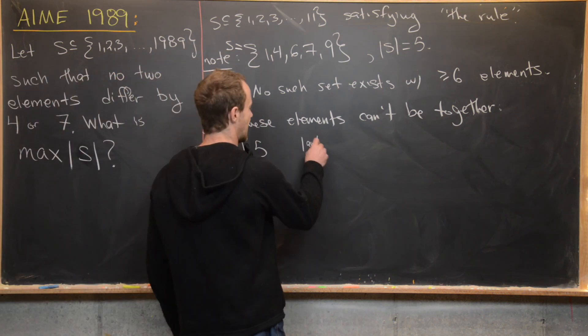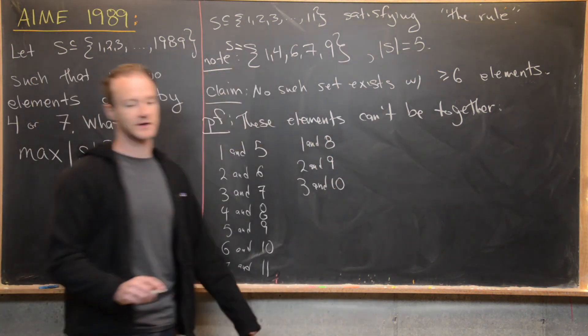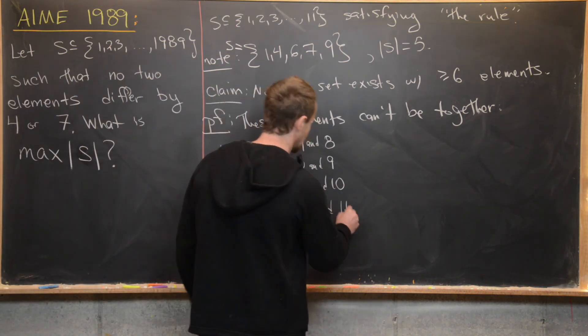Now let's look at our difference seven condition. So also one and eight are not allowed to be in the same set, and then two and nine are not allowed to be in the same set, three and ten are not allowed to be in the same set, and then finally four and eleven are not allowed to be in the same set.